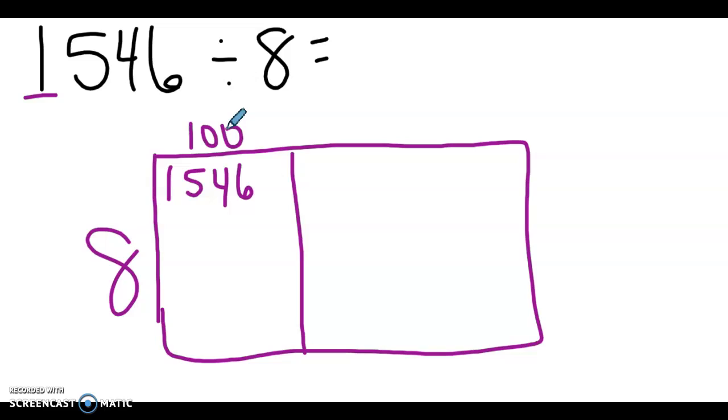I already know off the top of my head that eight times a hundred is going to get me 800. So I am going to use 100 as one of my partial quotients. Now I'm going to multiply 100 times eight, which gives me 800. And we know that whenever we come up with a partial quotient on top, we have to subtract.